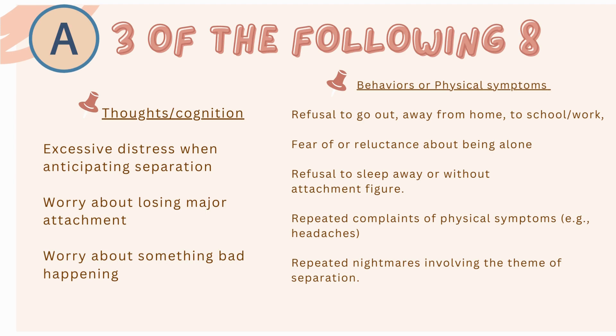Thoughts and cognition can look like the person experiencing excessive distress when they anticipate separation. They worry about losing the major attachment figure and that something bad is going to happen — either to them or to the attachment figure, like getting into a car accident or getting kidnapped.